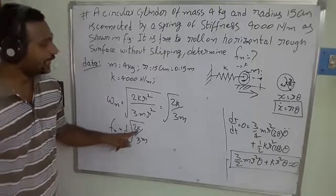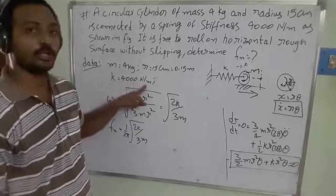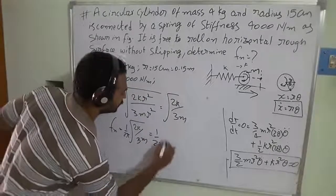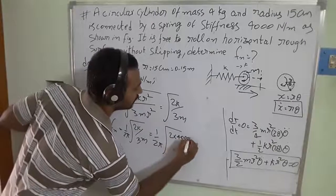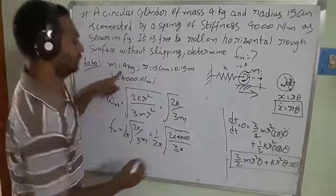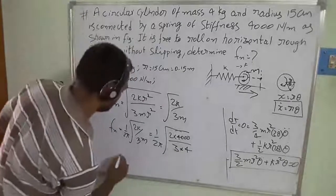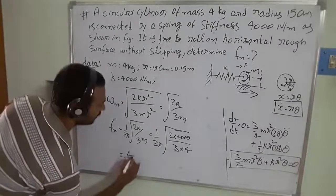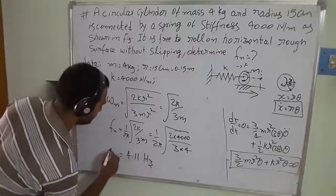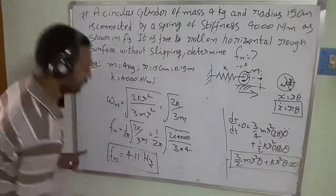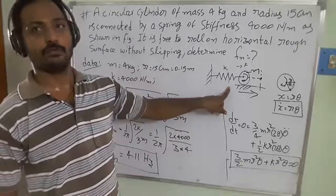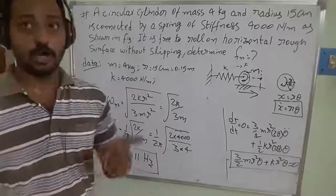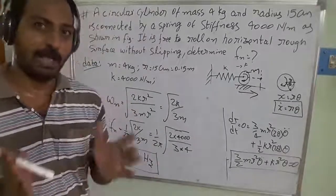Substituting the known values — k equals 4000 Newton per meter and m equals 4 kg — into the equation: f_n equals 1 over 2 pi times the square root of (2 times 4000) divided by (3 times 4). The final value obtained is 4.11 Hz. This is the natural frequency of this vibrating system.